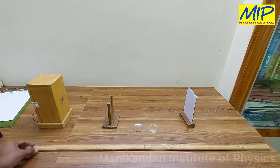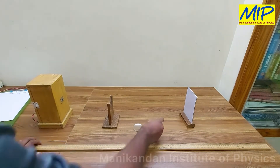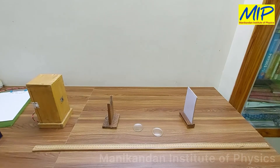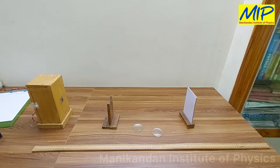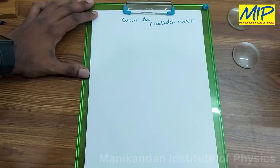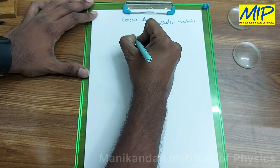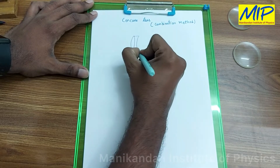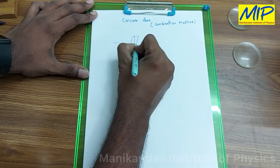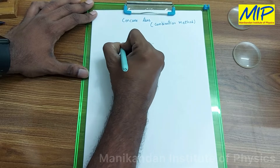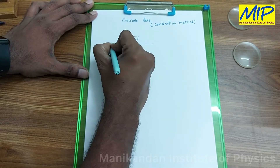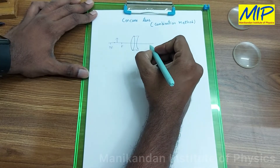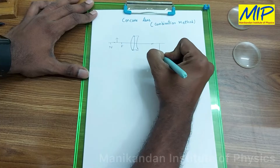Using this apparatus, I am going to explain how to determine the focal length of the given concave lens by the combination method. We have to combine a convex lens and a concave lens. If you are placing the object, the object should be placed between F and 2F. My image is formed at this point.